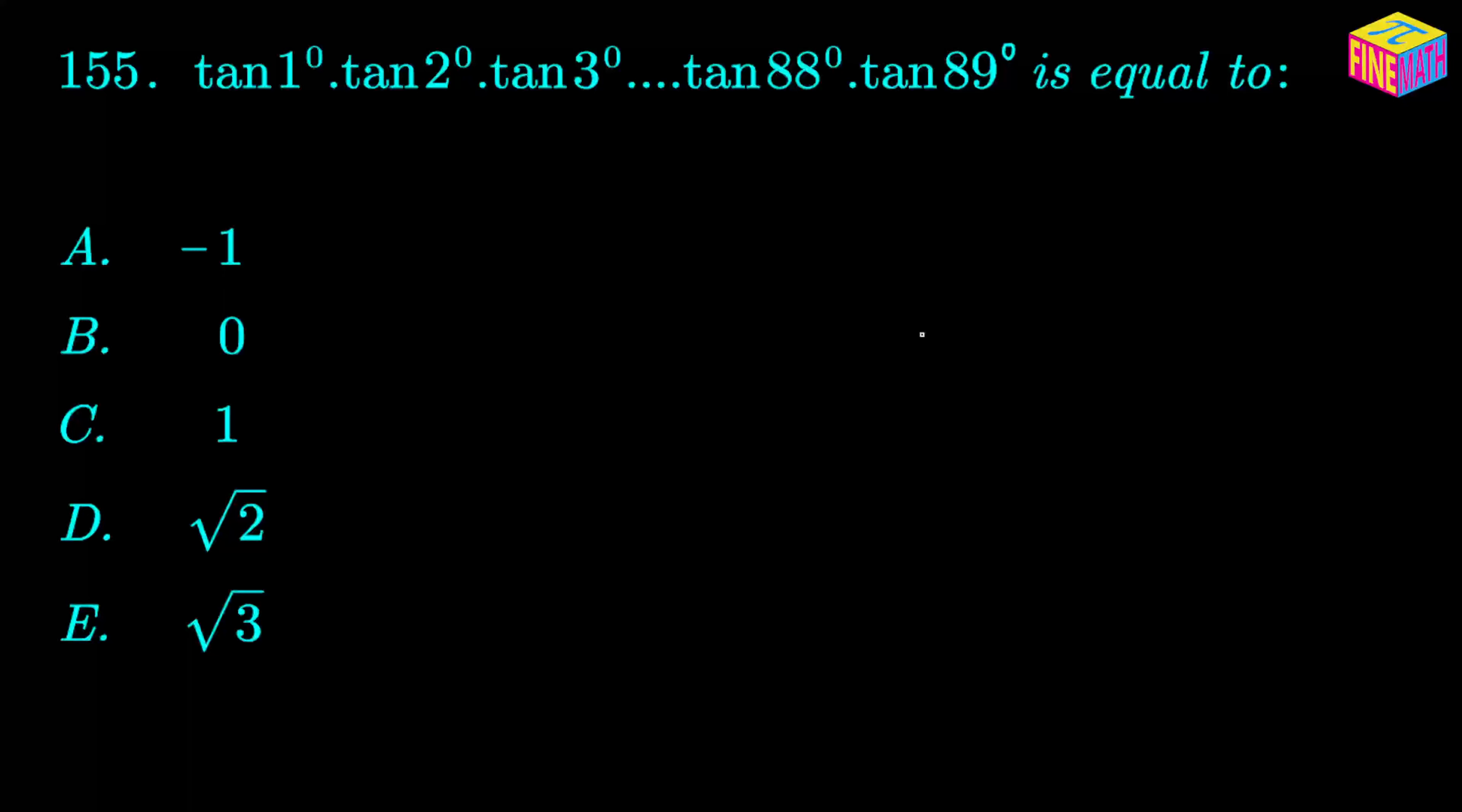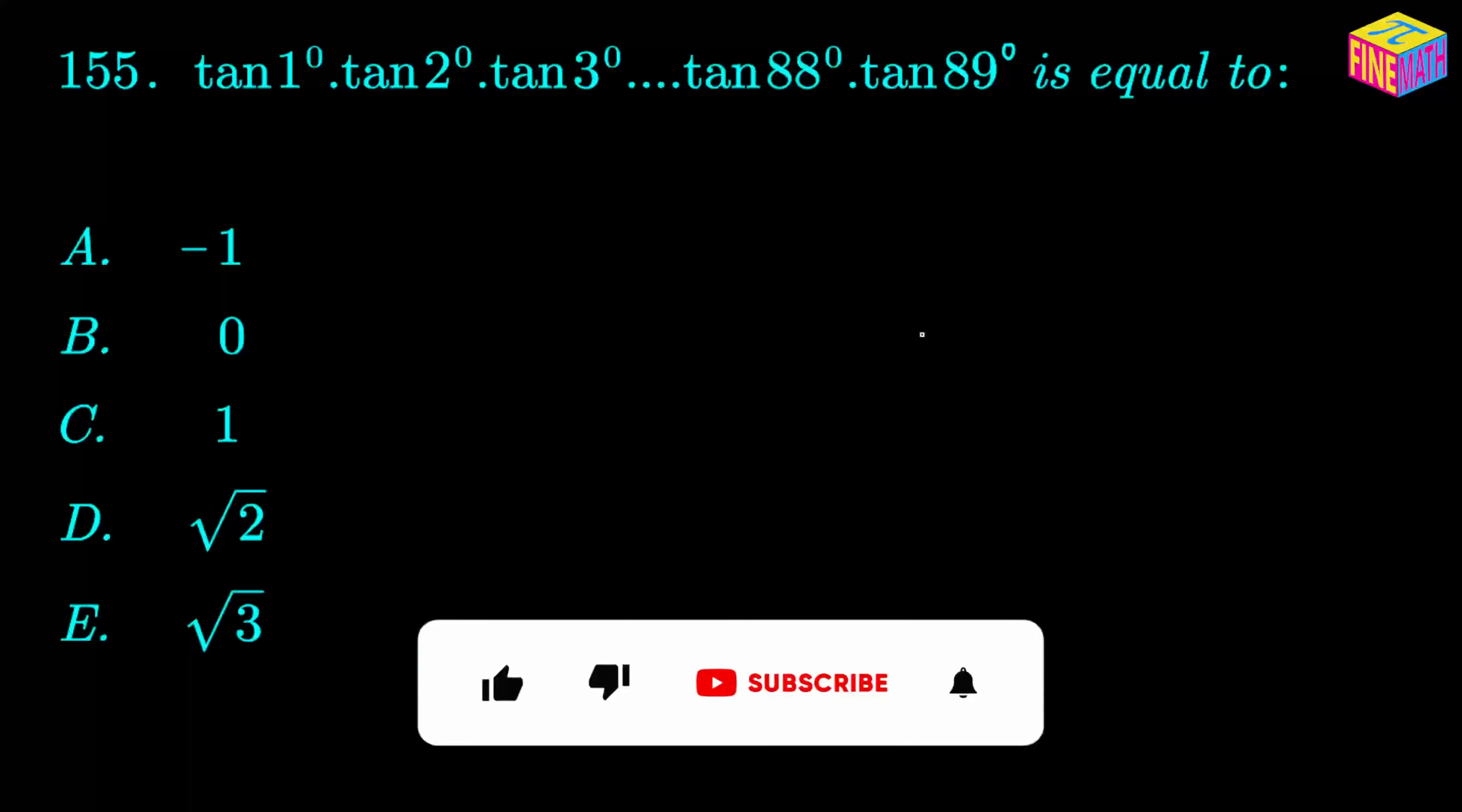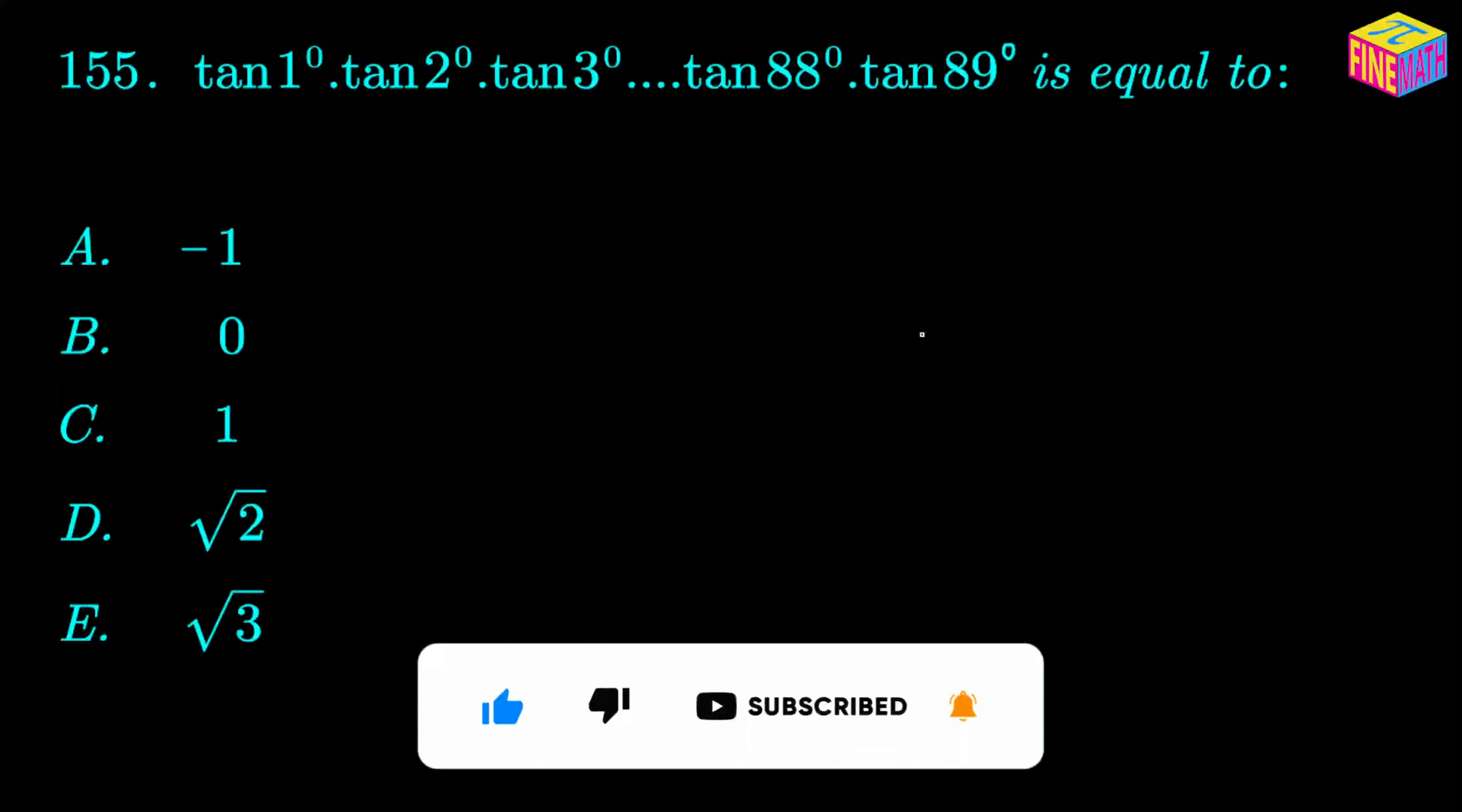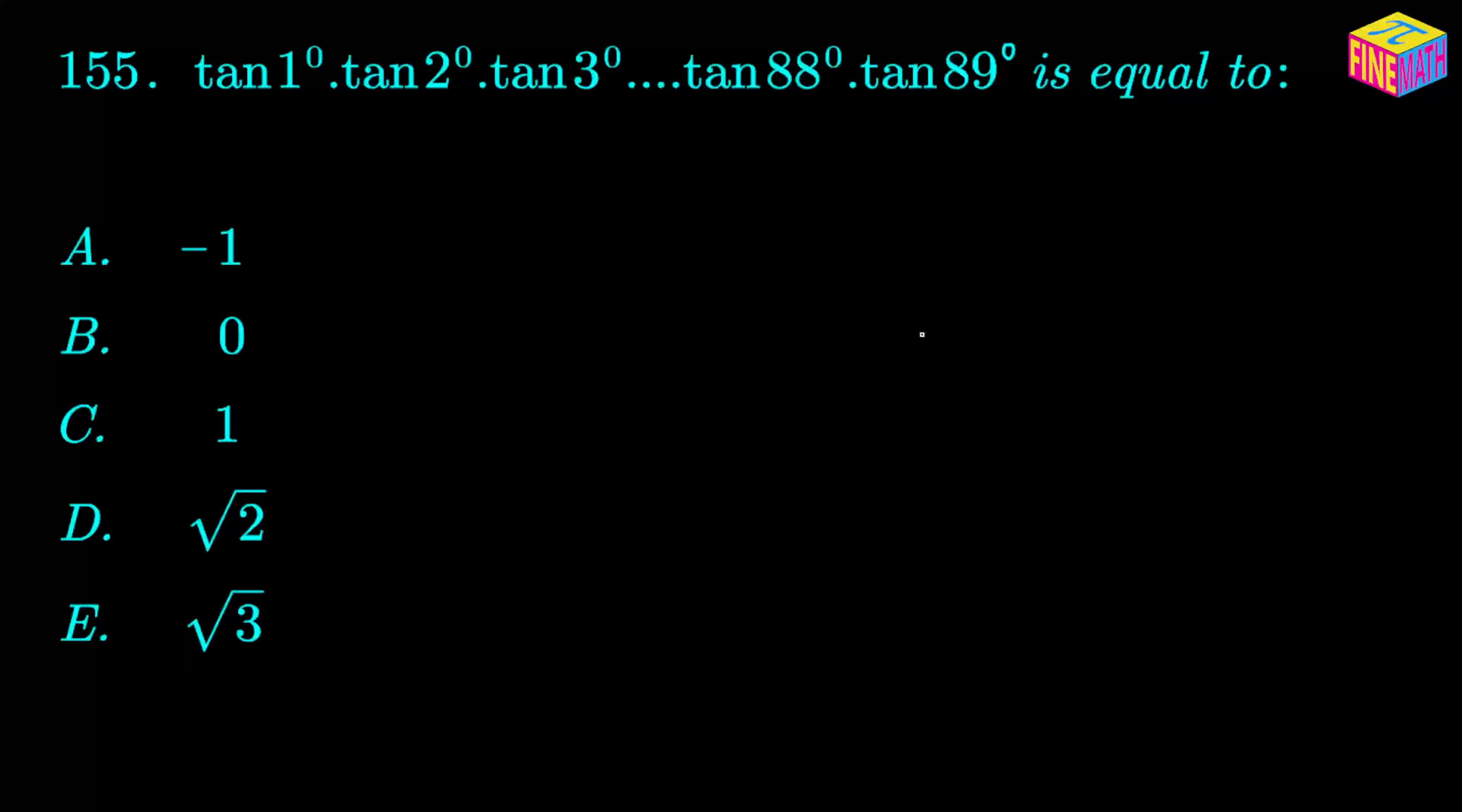Here the question says: tangent of 1 degree times tangent of 2 degrees times tangent of 3 degrees, all the way up to tangent of 88 degrees times tangent of 89 degrees is equal to which of the following 5 options. So this is a product of total 89 factors, and we have to find out the value of this product.